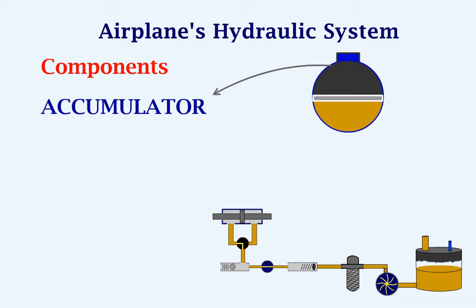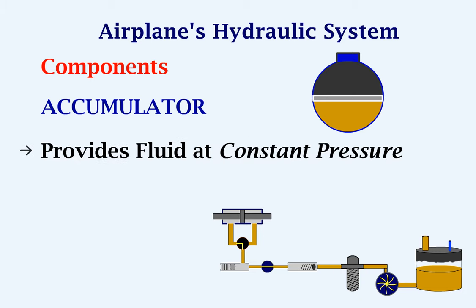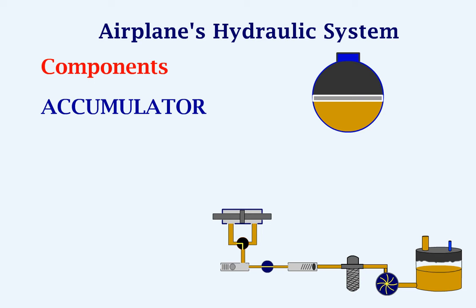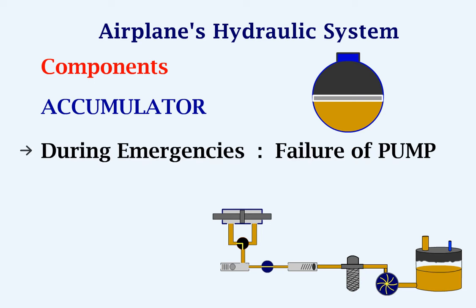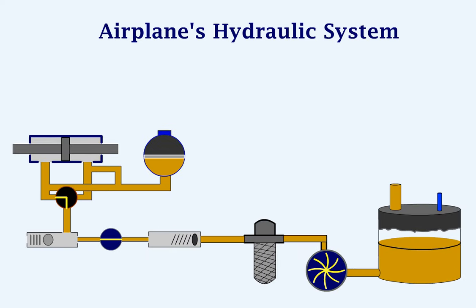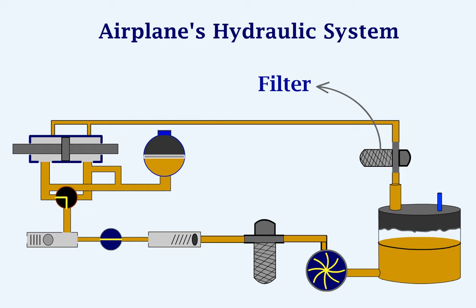The next component we will look at is the accumulator. The accumulator holds pressurized hydraulic fluid. The fluid and the air inside the accumulator are separated by a diaphragm. The accumulator is used to provide fluid at constant pressure to the actuators whenever there is high demand and sufficient pressure is not available. It is also the last pressure source during emergencies such as failure of the pump or if the pressure in the supply line drops. All these components form a basic hydraulic system that is used in an airplane. To complete the system, it must have a return line which has a separate filter to prevent any impurities from entering the reservoir.